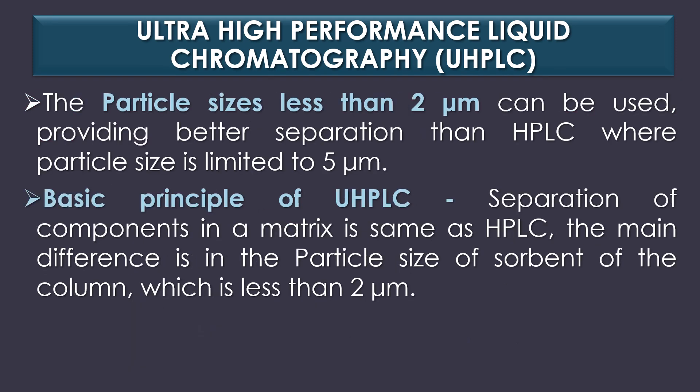In UHPLC, particle sizes less than 2 micrometers can be used, providing better separation than HPLC, where the particle size is limited to 5 micrometers. The basic principle of UHPLC for the separation of components in a mixture is the same as HPLC. The main difference is in the particle size of sorbent of the column, which is less than 2 micrometers.